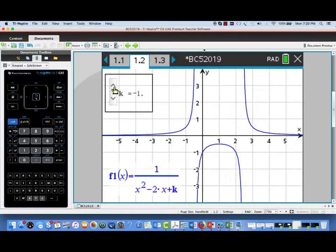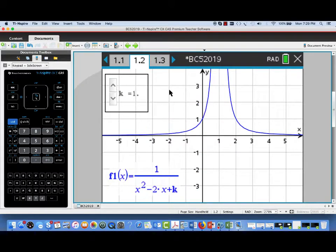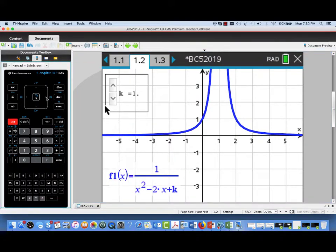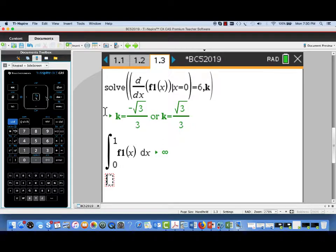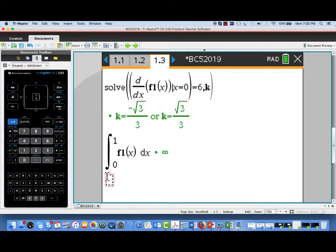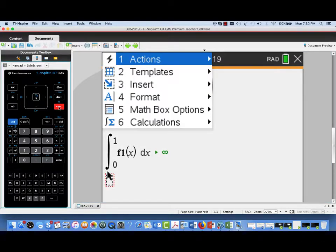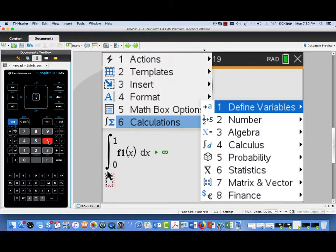Now the last part of this problem asks us to consider the function with k equal to 1. That was that very first value we tried. And remember that gives us a single asymptote, vertical asymptote, at x equal to 1. And we're asked for the integral between 0 and 2. Now since 1 is in the interior of the interval, we'll need to split this integral into two pieces.